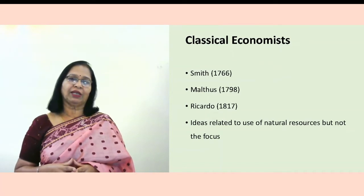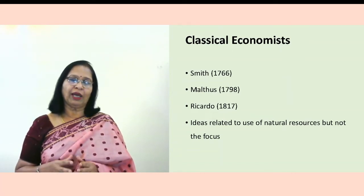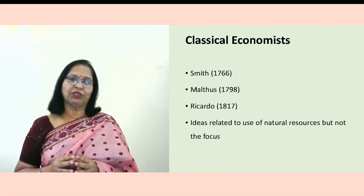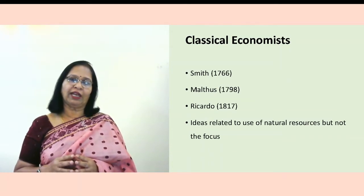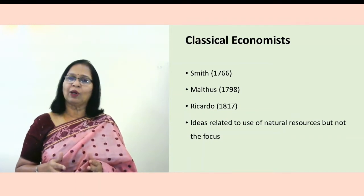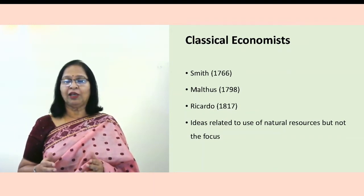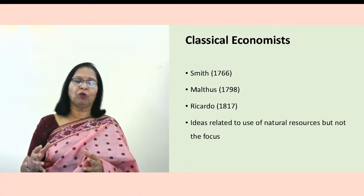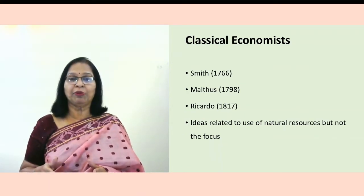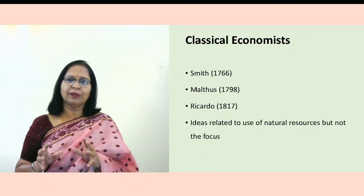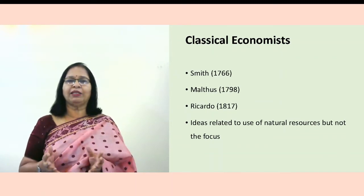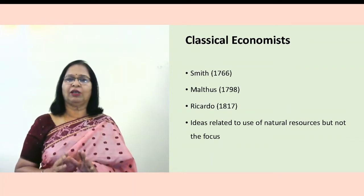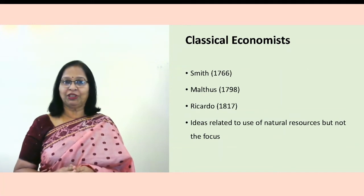The third writer in the classical school is David Ricardo, who raised the issue of the law of diminishing returns in agriculture. This in some way limits the ability to go on producing more and more, because nature has a limit beyond which production cannot take place. These three writers in a broad sense gave some ideas about environmental issues, though not directly focusing on them.